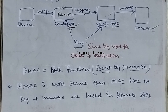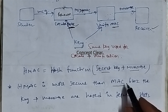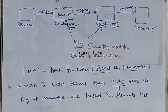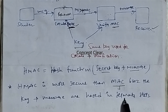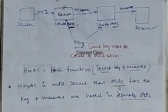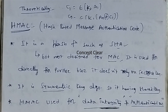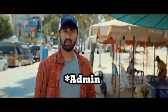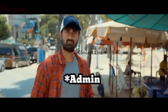HMAC is more secure than plain MAC — message authentication code — which provides less security. HMAC provides more security because the key and message are hashed in separate steps. By using the HMAC algorithm we can provide greater security. Thank you — please like, share, and subscribe to the channel.